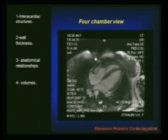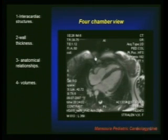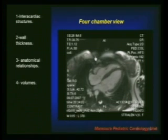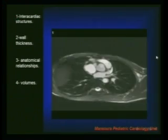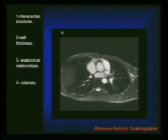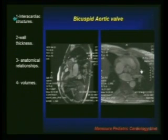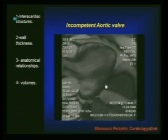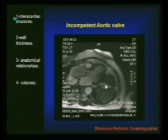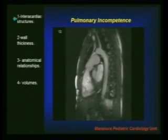This is a four-chamber view of a normal heart showing normal motion — the white blood technique in which blood flows beautifully throughout the chambers with no regurgitation, no stenosis. We can also identify structures such as the tricuspid aortic valve, and the bicuspid aortic valve with its regurgitant and stenotic lesion. Here is an incompetent aortic valve and a regurgitant dilated ascending aorta, as well as an incompetent pulmonary valve.